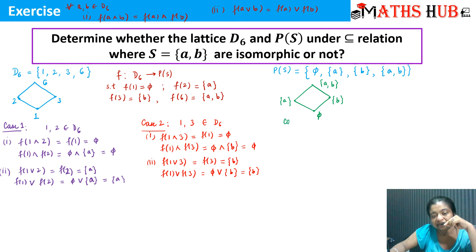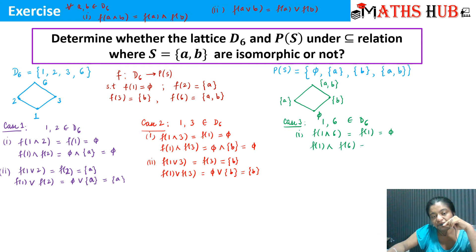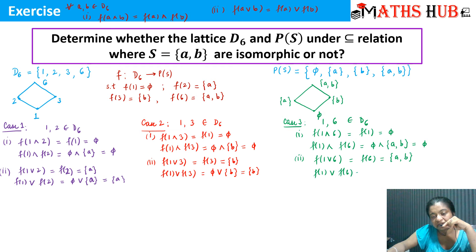Case 3: take the pair (1, 6). F(1 meet 6) = F(1) = empty set. F(1) meet F(6) = empty set meet {A, B} = empty set. For the second property, F(1 join 6) = F(6) = {A, B}. F(1) join F(6) = empty set join {A, B} = {A, B}. Both sides match.